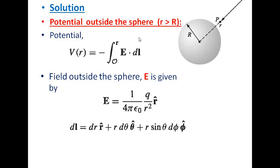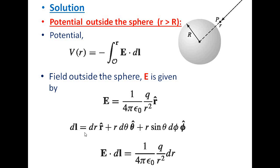Now we compute E·dl. Since E is (1/4πε₀)(Q/R²) R̂, and R̂·dl gives only the dR component, we get E·dl = (1/4πε₀)(Q/R²) dR.